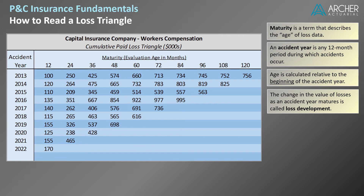In addition to observing loss development, triangles allow users to compare values at equal maturities by looking up and down a column. For example, we can compare cumulative paid losses through 24 months for each respective accident year by looking up and down the highlighted column. All values within a column are on an apples-to-apples basis with respect to maturity.